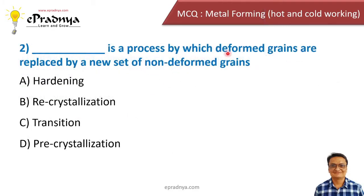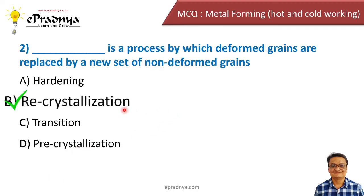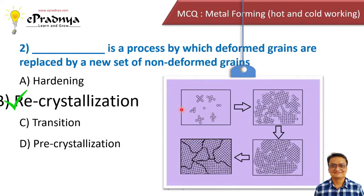Second MCQ: Blank is a process by which deformed grains are replaced by a new set of non-deformed grains. Options are hardening, recrystallization, transition, and pre-crystallization. The correct answer is recrystallization. This happens when we heat a material to the recrystallization temperature. The crystals of the material form and increase in size, creating new grains. The previous grain structure is replaced by this new grain structure, which is part of the hot working process.